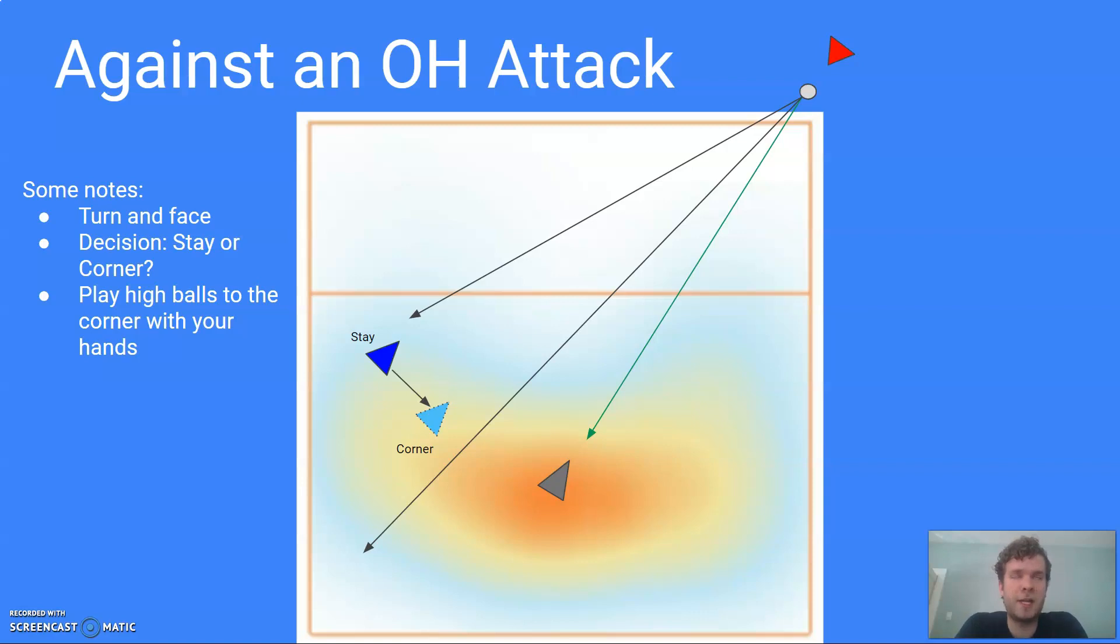And then they have to decide, are they going to stay where they are or go play the corner? And basically what you want to be thinking in that situation is where I'm standing, do I think this hitter can hit at me? So we're looking at the hitter, we're not considering the block. We want to look at that hitter and say, oh, it looks like they're hitting a line. I better shift towards the corner in case it comes off weird or they're being sneaky and they're going to somehow hit this corner a little bit better.